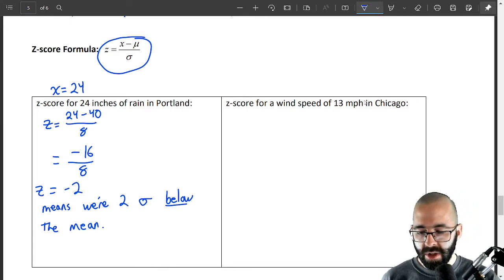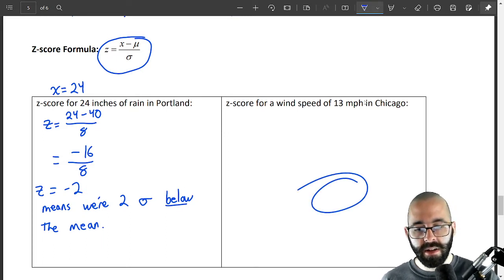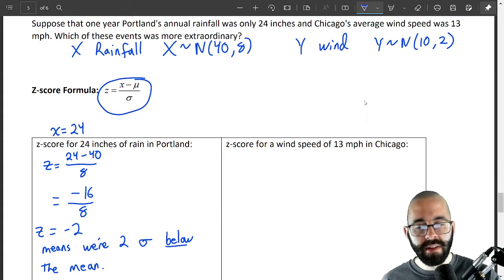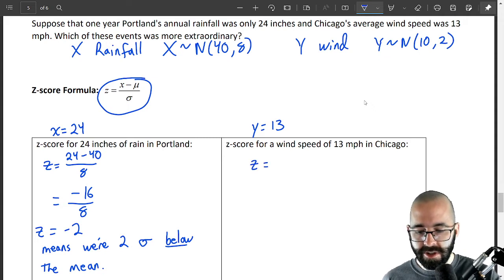Okay, so we'll look at the z-score over here. Do it for 13 miles an hour in Chicago. If big Y is a random variable, little y is what actually happened, 13 miles an hour.